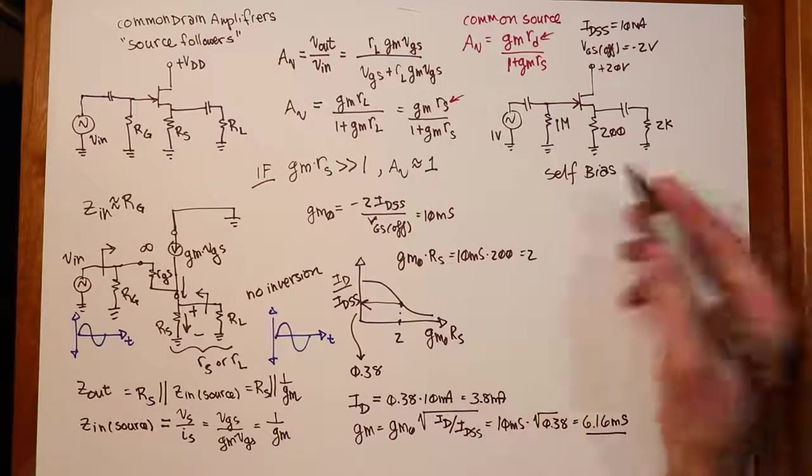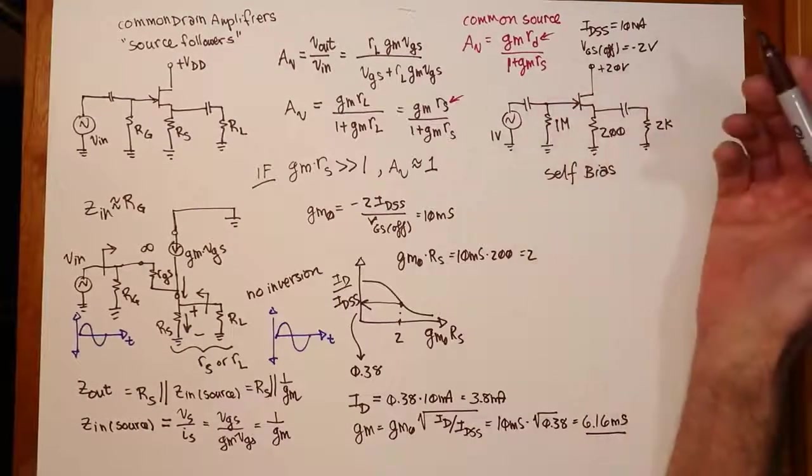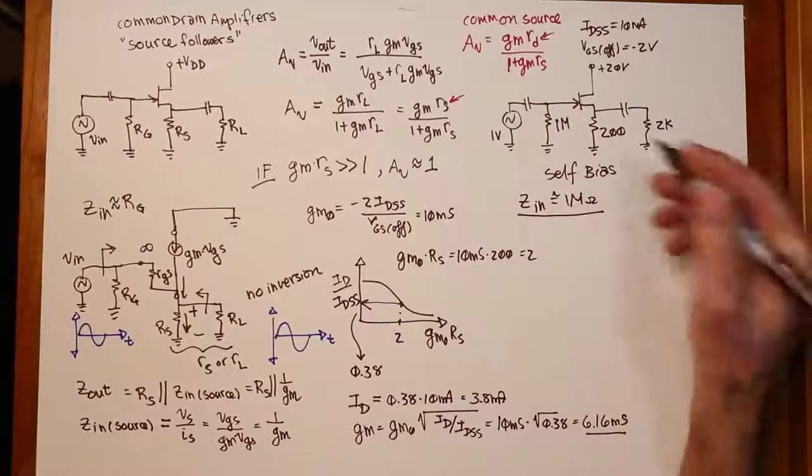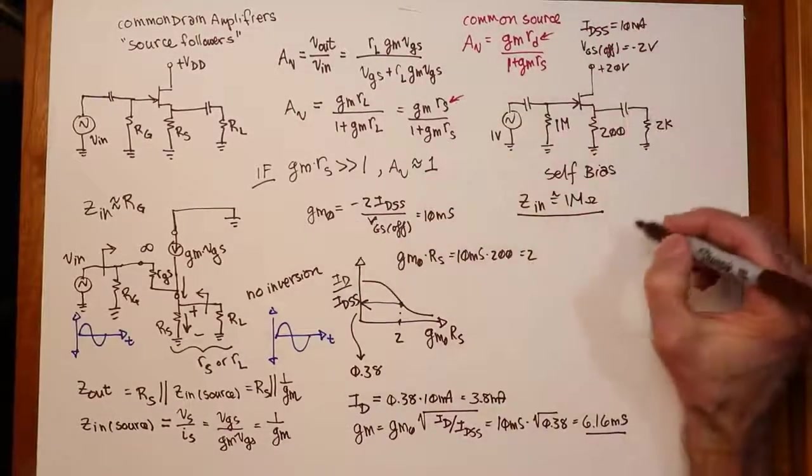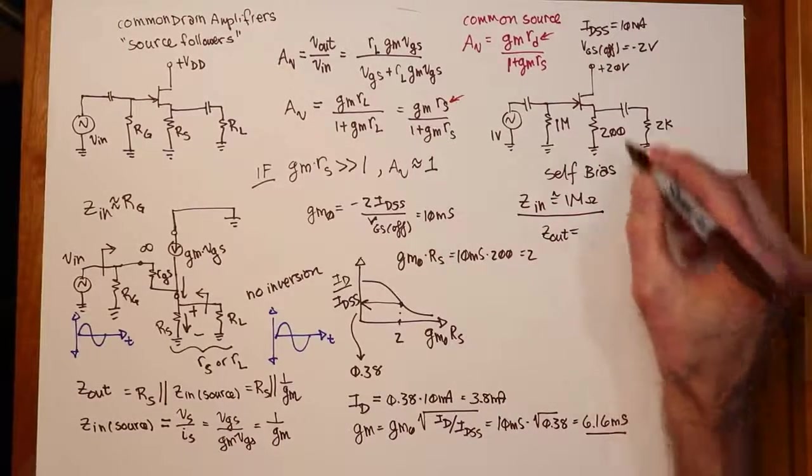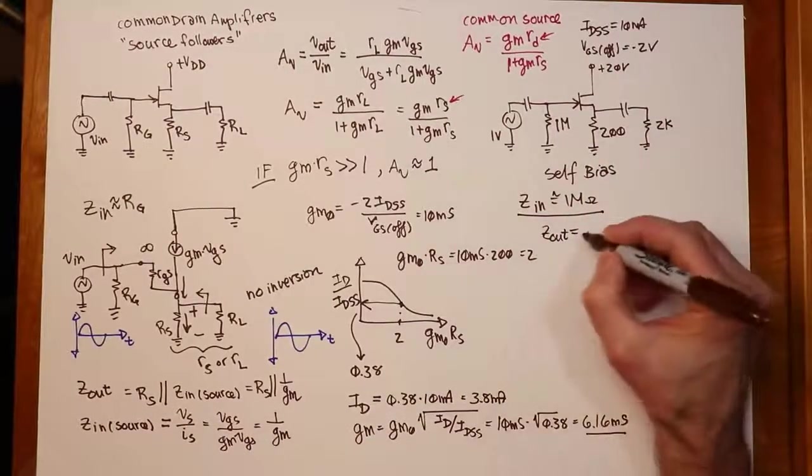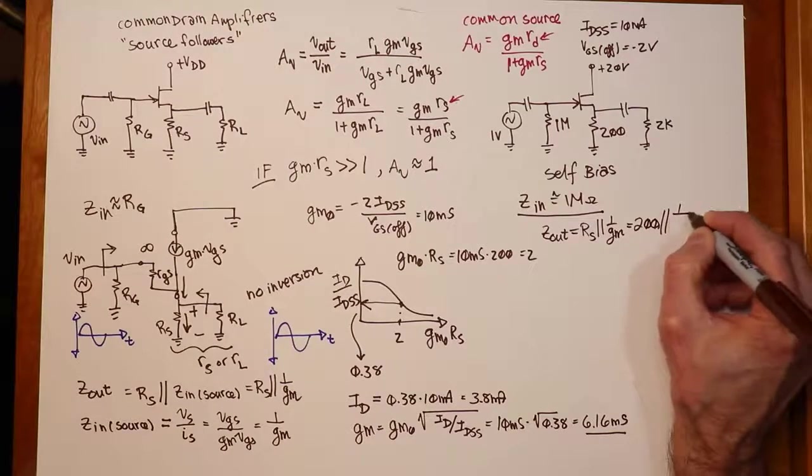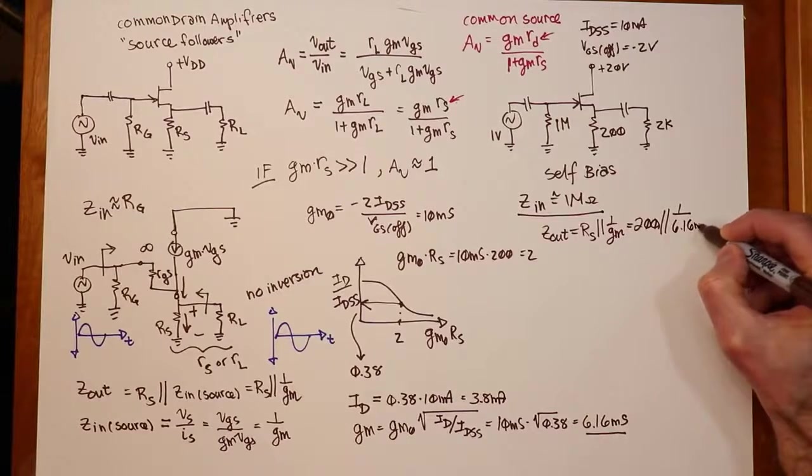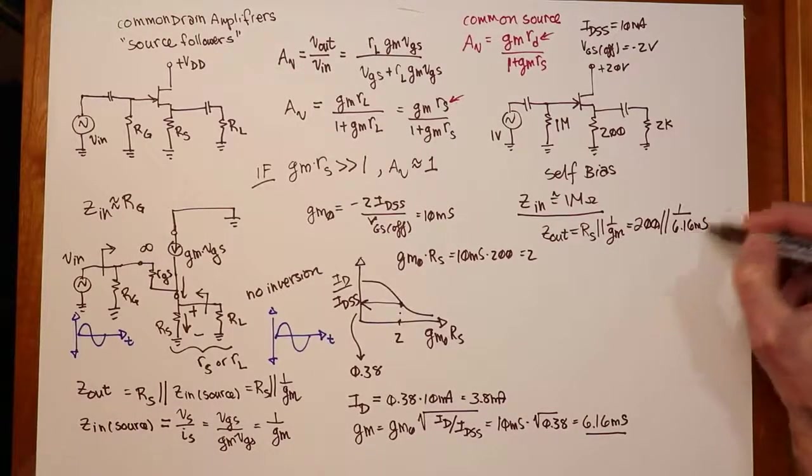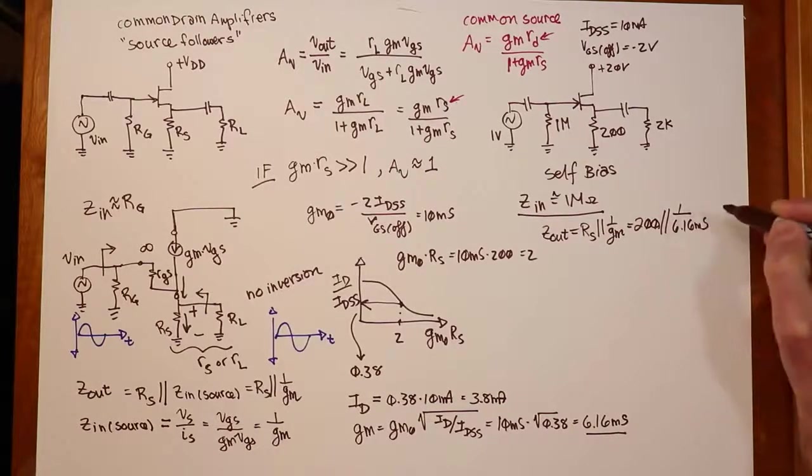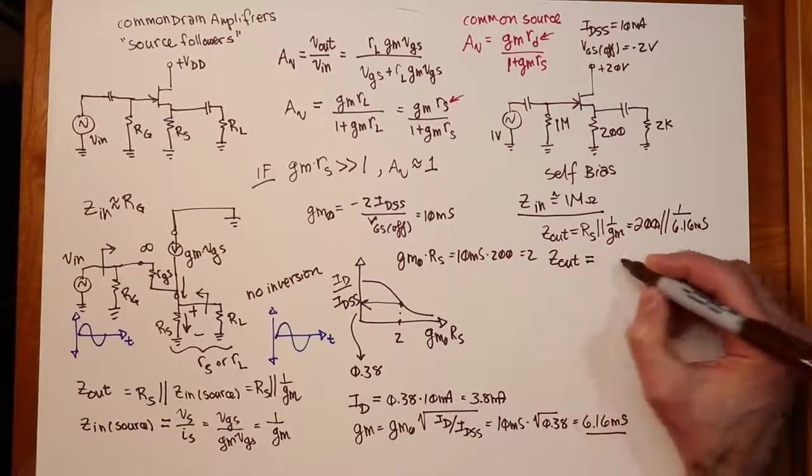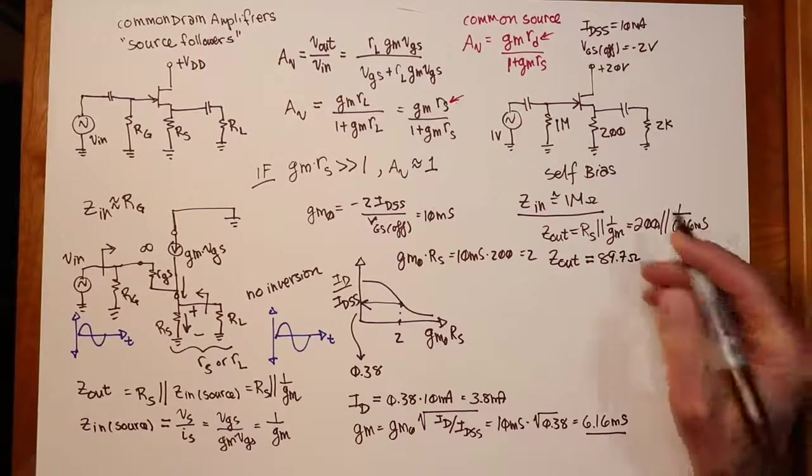So we can now figure out the values of interest. Our ZIN, by observation really, is just 1 meg. We just say it's about a meg, we're good. At low frequencies, high frequencies, capacitance is going to start shunting and it's going to drop off. The ZOUT is the 200 ohm, we're looking at RS in parallel with 1 over GM. So that's 200 ohms in parallel with 1 over 6.16 millisiemens. That's like 160 some odd, 162 ohms for this piece of it. You put that in parallel with the 200, and you're looking at a ZOUT of 89.7 ohms.